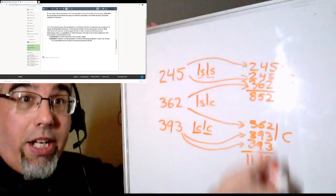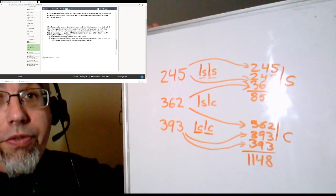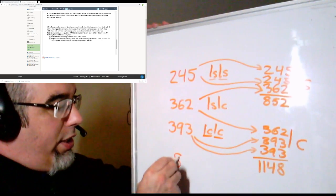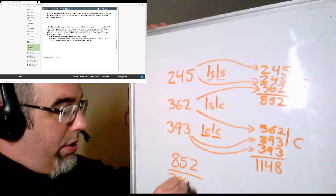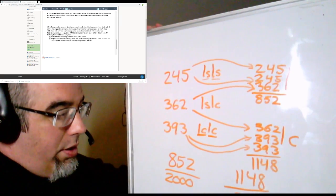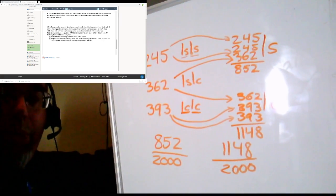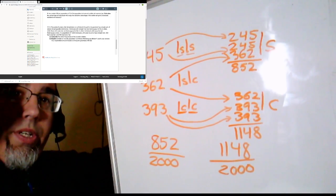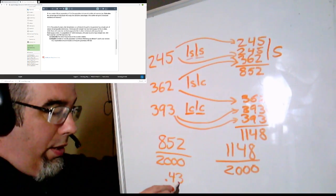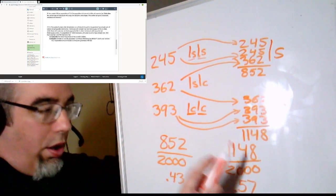Now we can figure out the frequencies in the total gene pool. There were a thousand individuals, which means there are two thousand total alleles. So it's 852 divided by 2000 and 1148 divided by 2000. What we should get, once rounded, is a value for capital IS of 0.43 and a value for capital IC of 0.57.